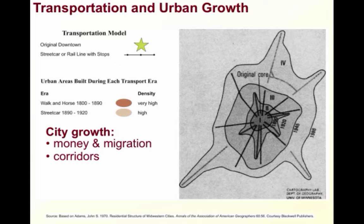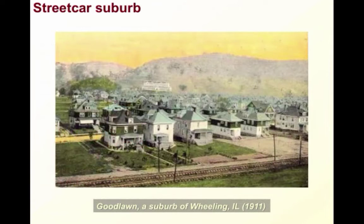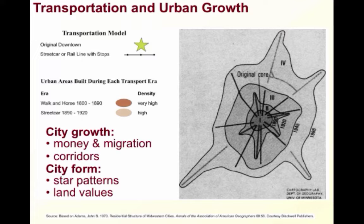Some cities declined that were not connected and were bypassed by the railroad network. The form of cities was also altered — CBDs and rail corridors grew, making for wider roads, and the urban pattern shifted as star patterns or hub-and-spoke patterns emerged. Streetcar suburbs sprung up in the hinterlands, as seen in this old postcard from 1911 of Goodlawn, a suburb of Wheeling, Illinois. Real estate around passenger stations became more valuable and popular, especially for commercial interests. Additionally, railroads created socioeconomic divisions, with some people finding themselves on the wrong side of the tracks. This looks more like Homer Hoyt's sector model.